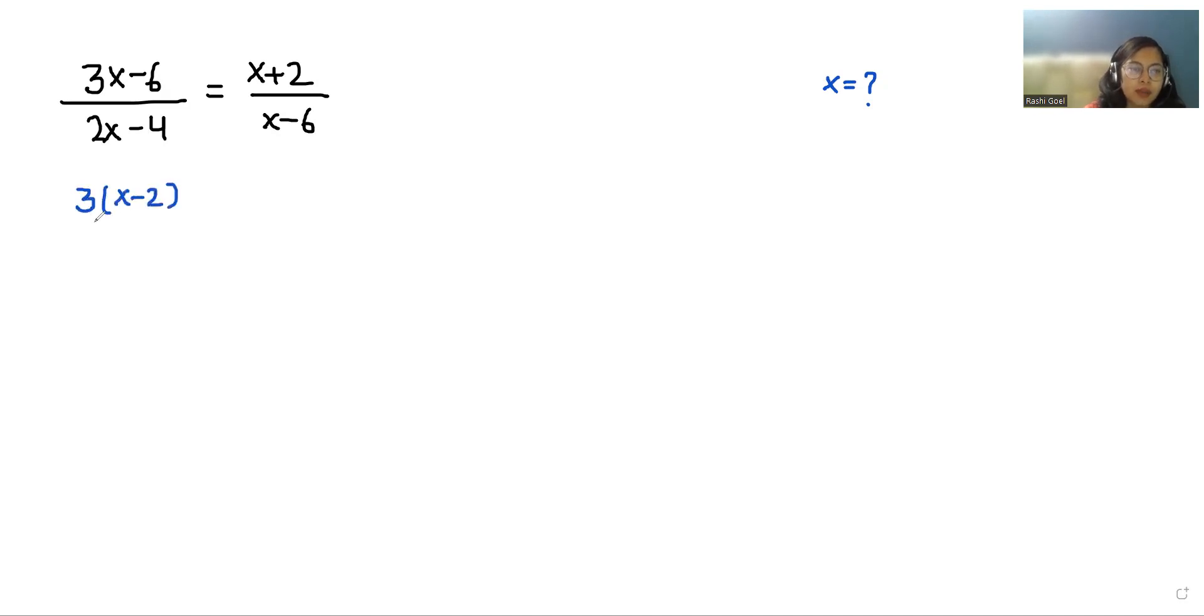So what is left? x minus 2. Similarly from the denominator if I take 2 as common, x minus 2 equals (x+2)/(x-6).